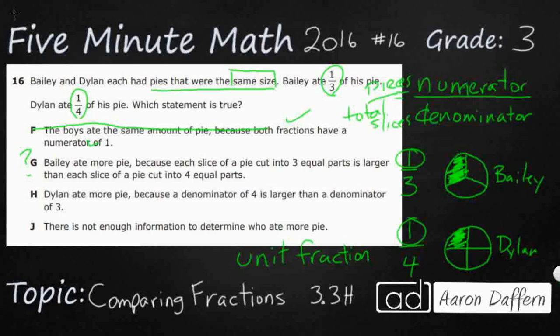Let's look at H. Dylan ate more pie because a denominator of four is larger than a denominator of three. Well, a denominator of four is larger than a denominator of three, but that just means the same amount of pie is cut into more pieces and each piece is going to be smaller. So that's incorrect. And then J, there's not enough information to determine who ate more pie. No, there definitely is. Our answer is going to be G because when you have the same numerator, you can compare the denominators and say one-third is greater than one-fourth.